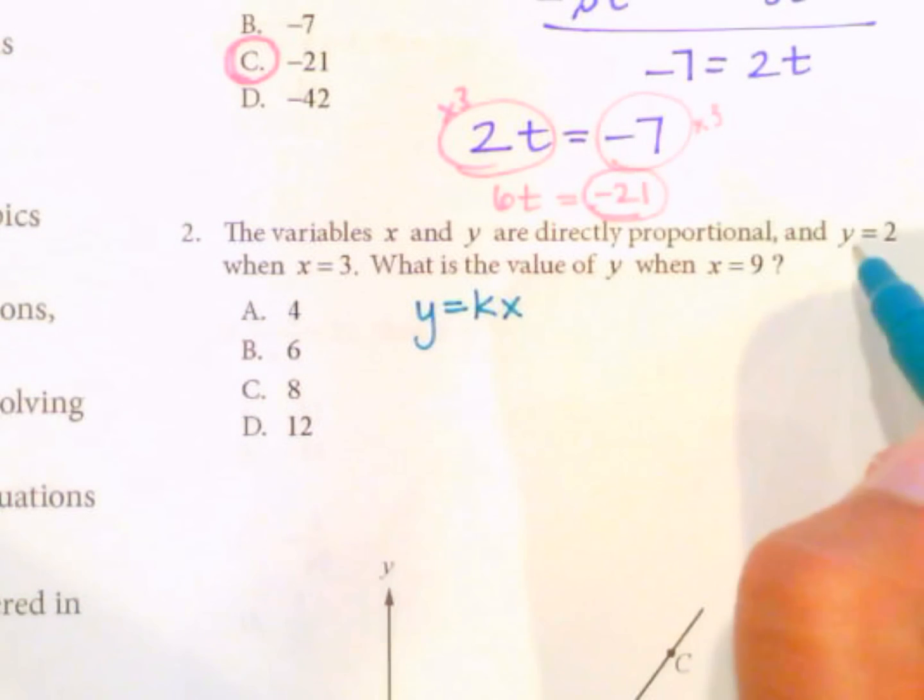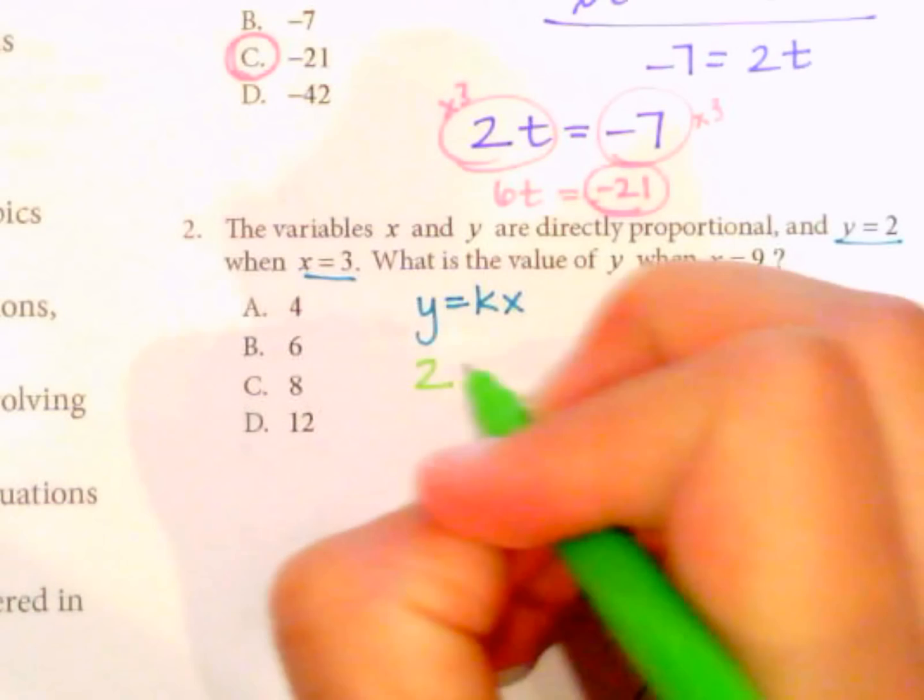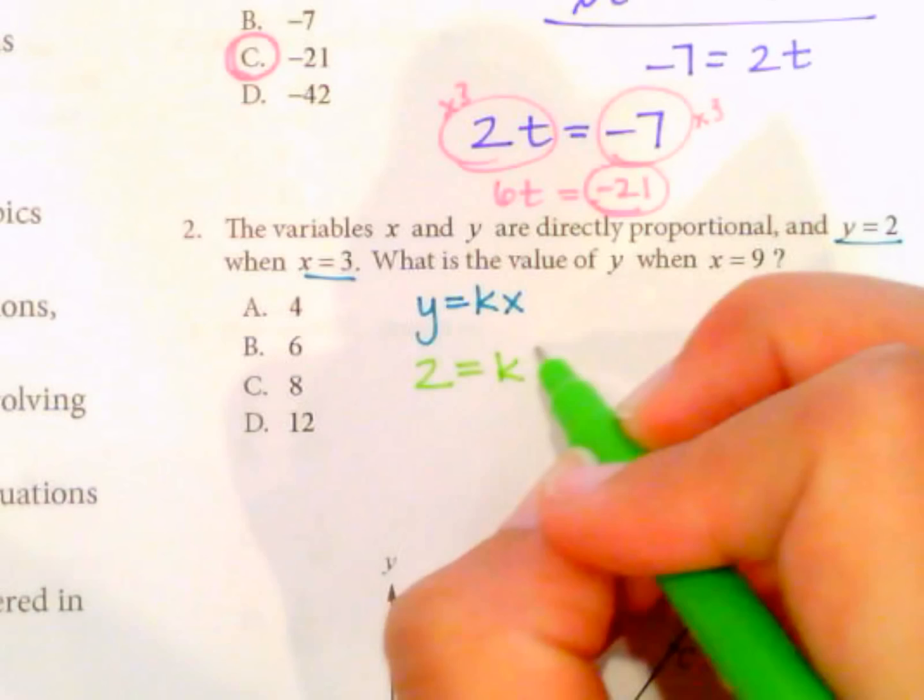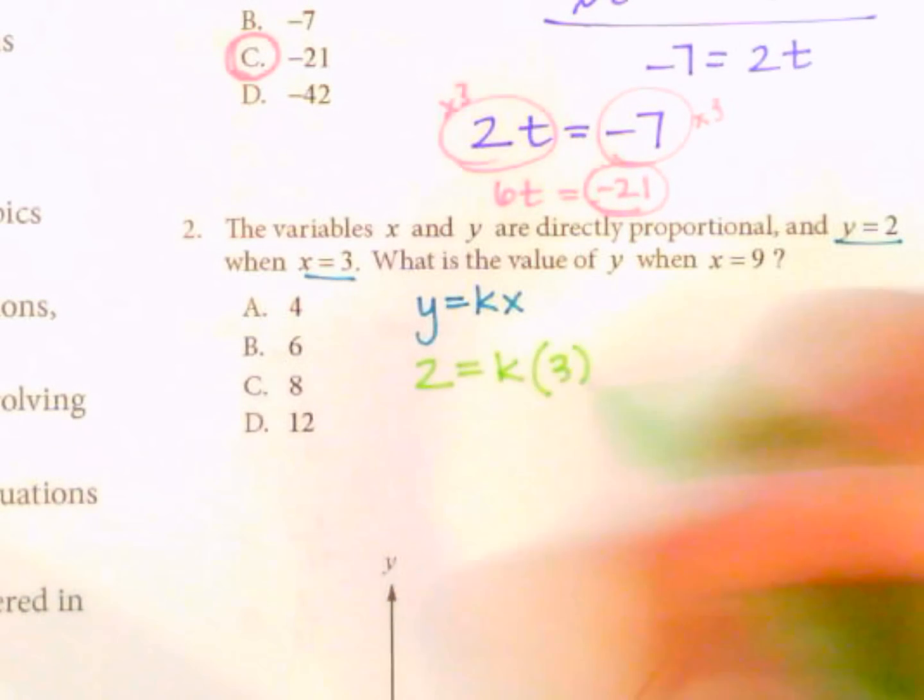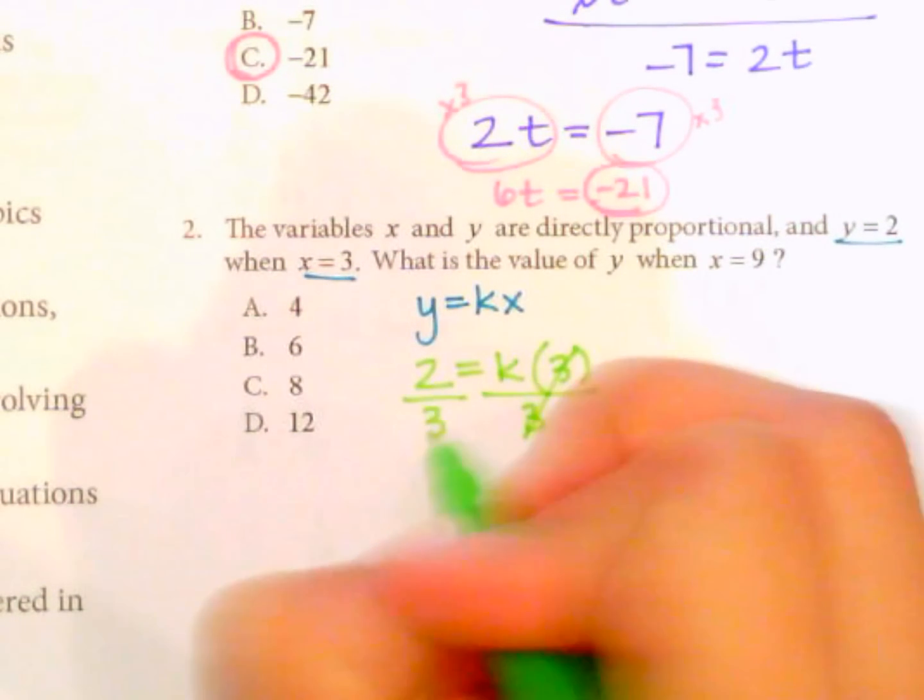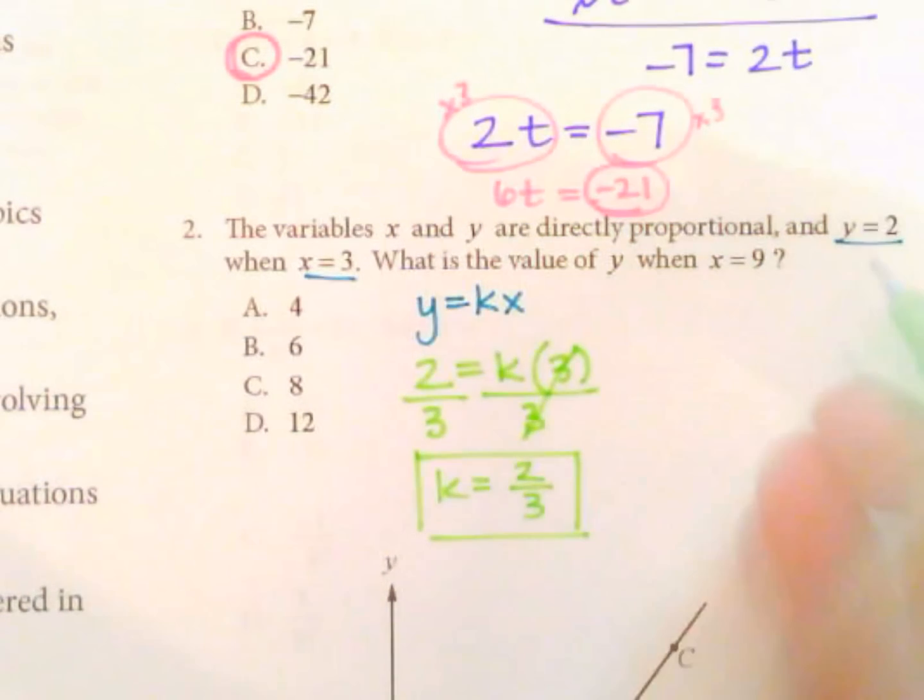So what we're going to do is take this first set of values here. y equals 2 when x equals 3. So I'm going to go in and plug in those numbers. So y is 2. We're looking for k, so we can use it for the second part of the problem. x equals 3. So in order to solve for k, we have to divide by 3 on both sides as usual. So k equals 2 thirds. So this is not our answer, but we're going to use it to find the answer.